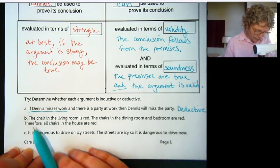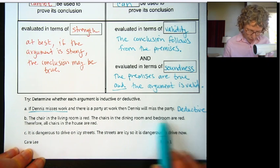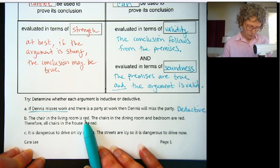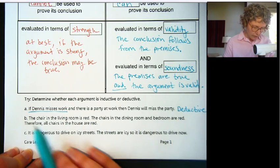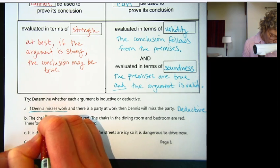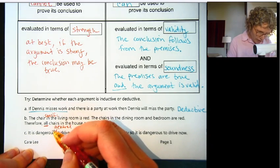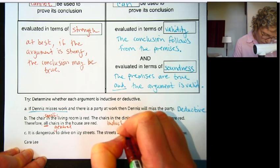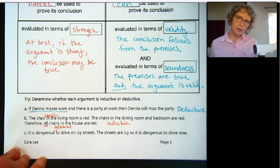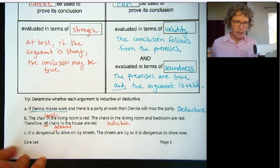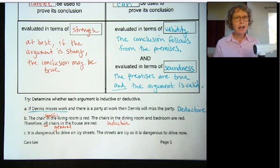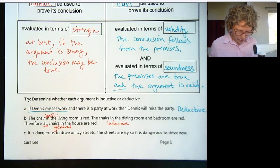Let's look at the second one. The chair in the living room is red. The chairs in the dining room and bedroom are red. Therefore, all chairs in the house are red. Chair in the living room is red — that's a specific example. Therefore, all — that's general. So specific to general, this is an inductive argument. We can't prove all chairs in the house are red unless we've seen all the chairs. We could say this is a strong argument, but we still cannot prove it.